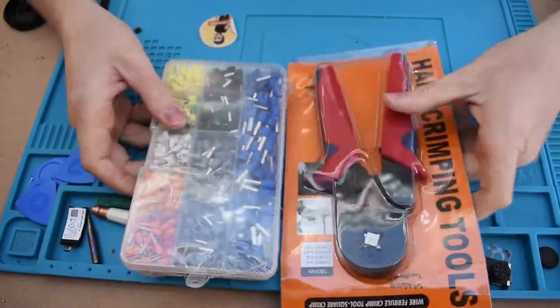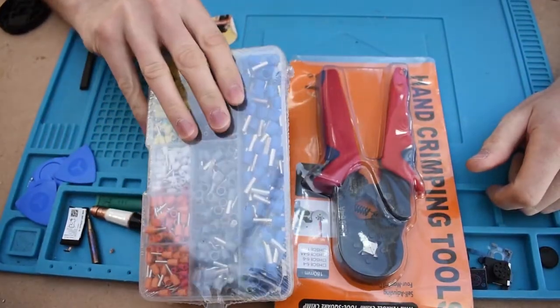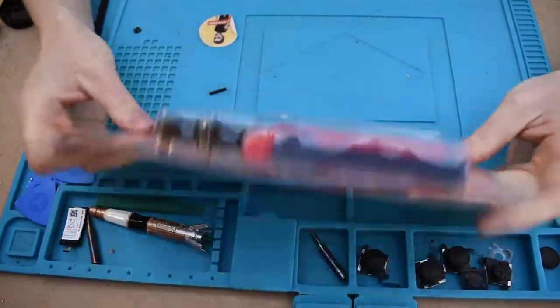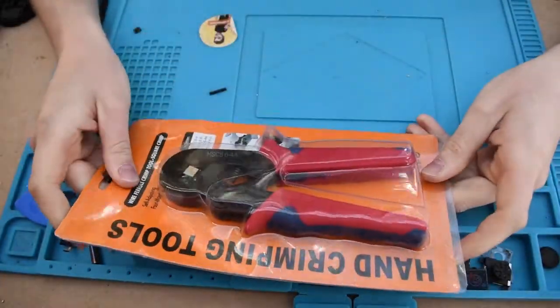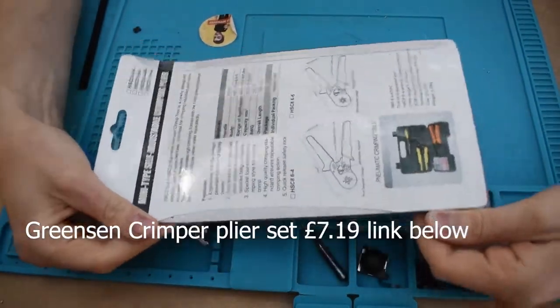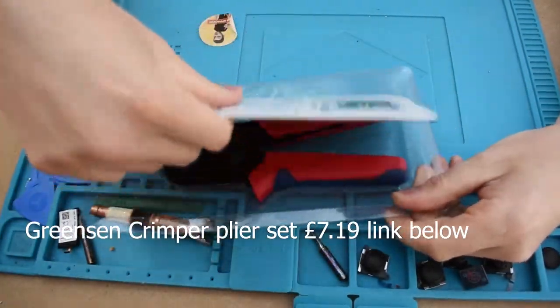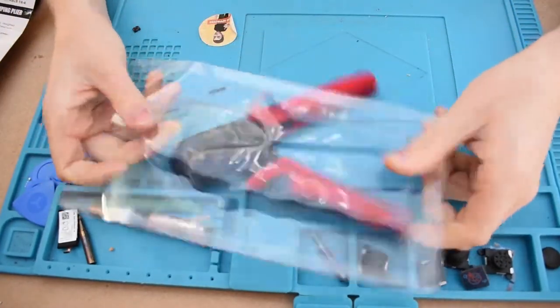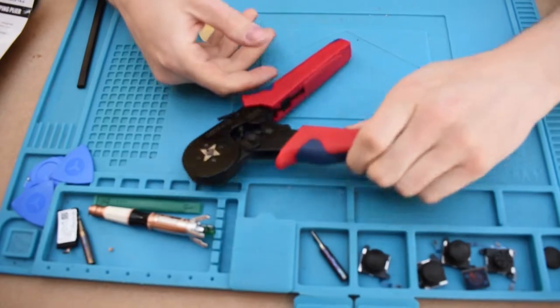Okay, so what comes in this set is a bunch of ferrules and the tool itself. It's come like this where it's got that cheap plastic and cardboard. Let's get it open. There's no frills, this really isn't.